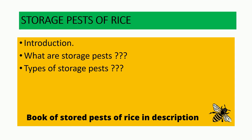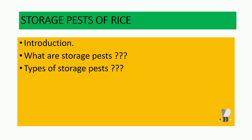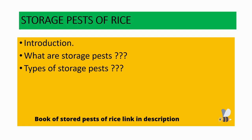In the storage pests, they are making losses for human consumption purposes, because storage pests cause infestation and excreta which are not useful for human consumption. In post-harvesting losses, storage pests like insects, rodents, and microorganisms also make some damage to food grains, resulting in economic loss and problems for human consumption.